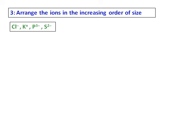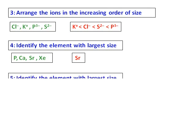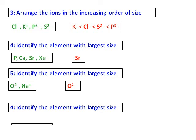For increasing order of size problems, consider the number of electrons and protons and the force with which the nucleus pulls the electrons. Potassium will have the least size in its set. Strontium will have the larger size in its set. For O²⁻ and Na⁺, O²⁻ will have a larger size. Note that the more negative the charge on the ion — when the number of electrons is the same — such as P³⁻ or S²⁻, it will have a larger size.